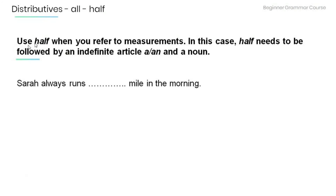Also remember that we use 'half' when we refer to measurements. In these cases, 'half' needs to be followed by an indefinite article — 'a' or 'an' — and a noun. Fill in the gap: 'Sarah always runs half a mile in the morning.'